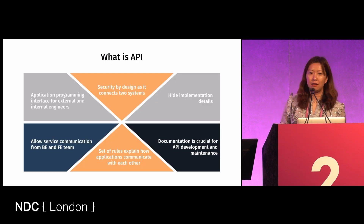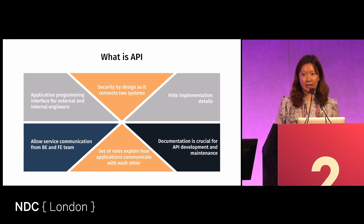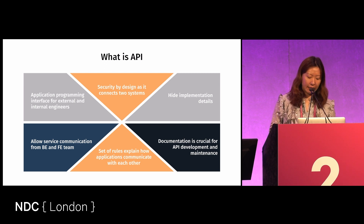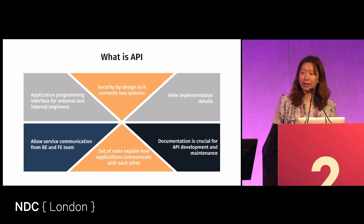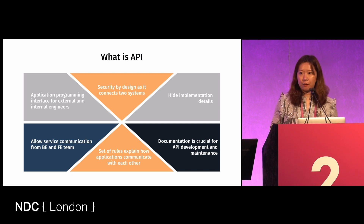Very quickly, because this is a lightning talk, I won't be able to go into detail very much, but I will try to explain the ideas of how we should design API for the front-end team, and also maybe for the back-end team as well. So, what is API? API allows service communication between back-end and front-end teams. It's a set of rules explaining how applications communicate with each other. It hides implementation details, and it's basically an interface for your external and internal users.